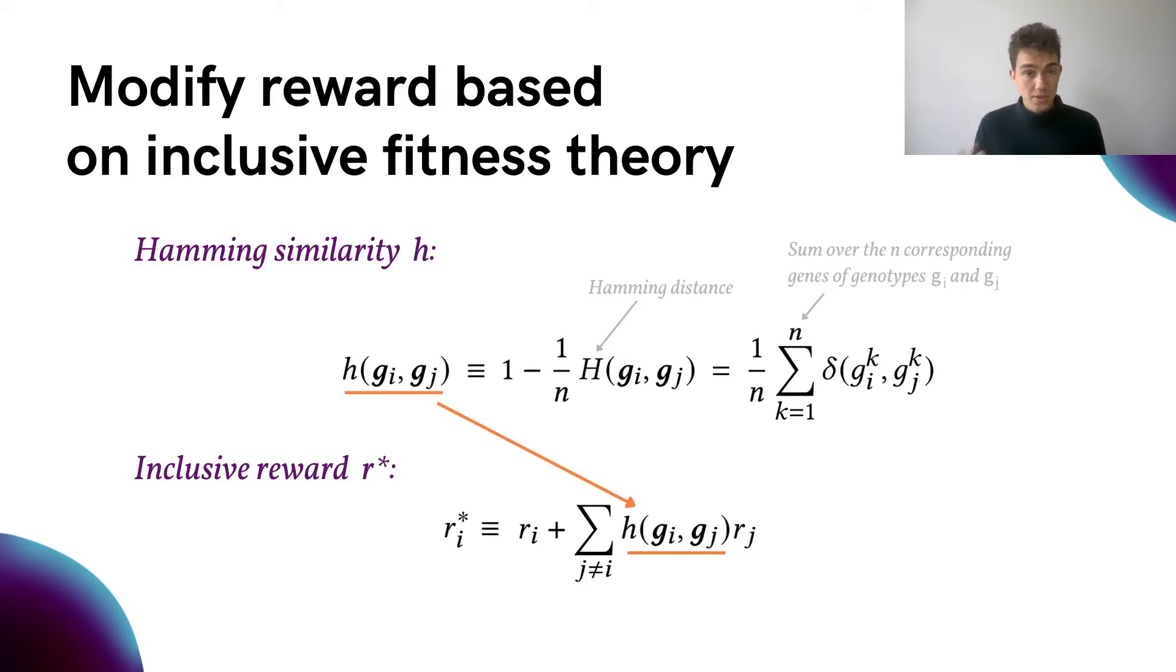The definition of the Hamming similarity is shown at the top, where capital H is the Hamming distance, delta is the Kronecker delta, and we sum over the corresponding genes.